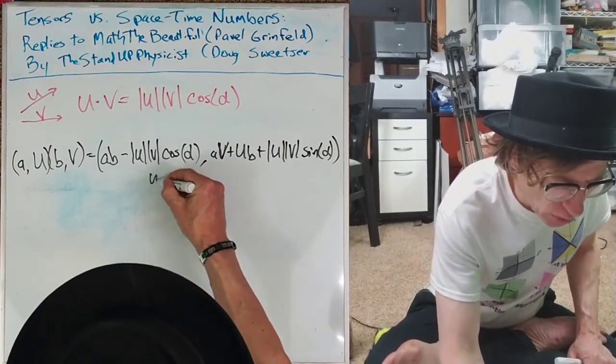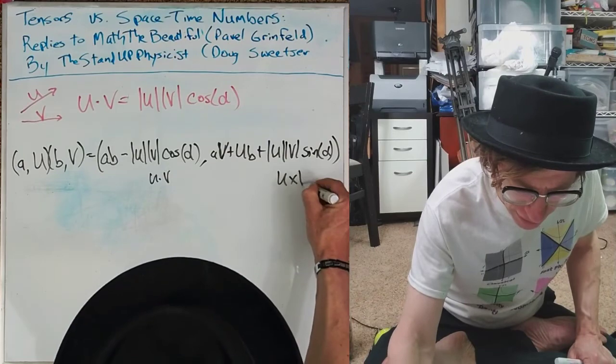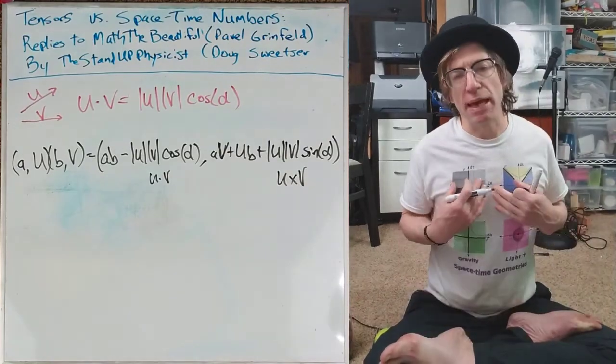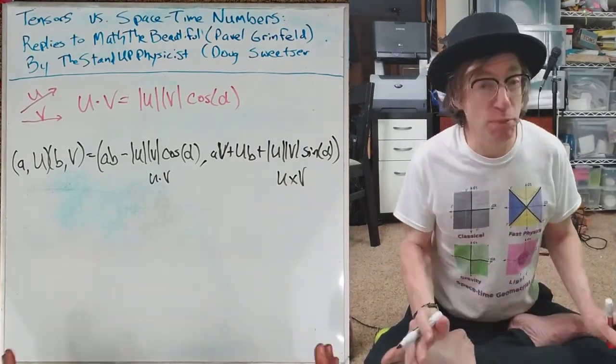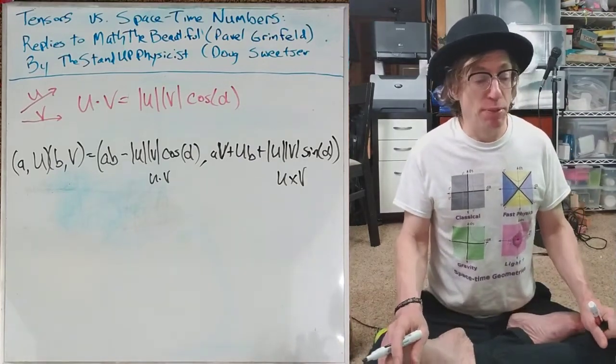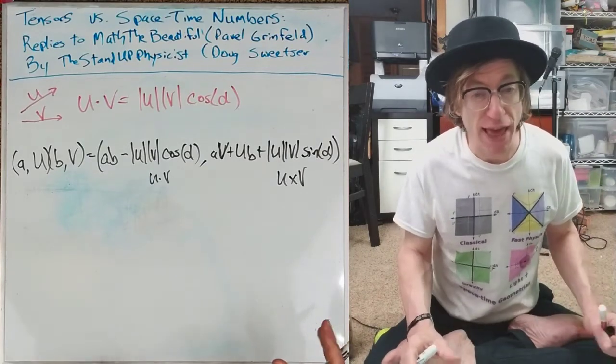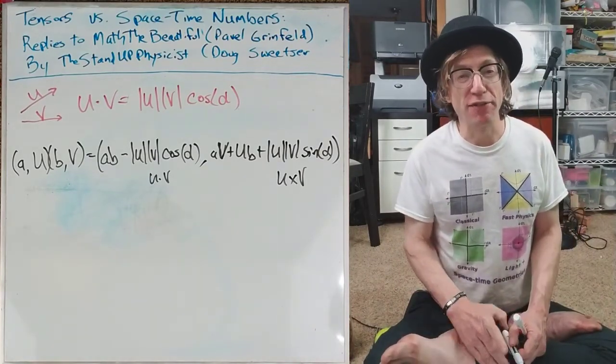So this is U dot V, and this is U cross V. So, to me, that is more beautiful, because it feels complete. There's nothing else you can do between a scalar and a three-vector product than that. And that's why I like it. Thank you very much.